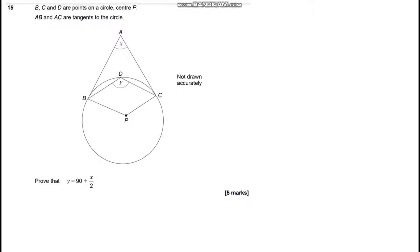We are looking at question 15 of the 2022 paper 1 for the Further Maths GCSE. We have been given a circle with a four-sided shape inside and then a triangle coming out from that circle. We need to prove that y equals 90 plus x over 2.